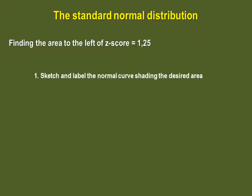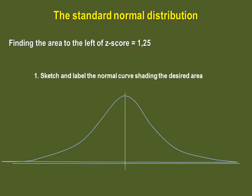First, we must sketch and label the normal curve, shading the desired area. We know that 1.25 as a Z-score is higher than the mean, so we are looking for the area to the left of Z-score 1.25, as is drawn here.